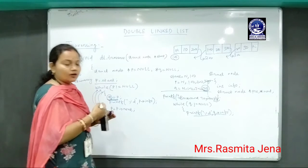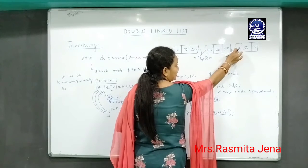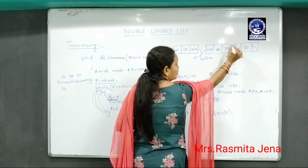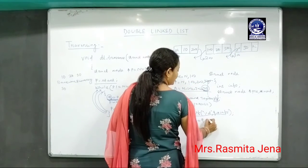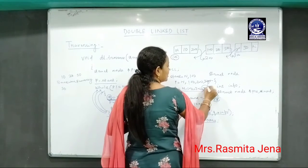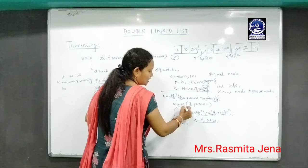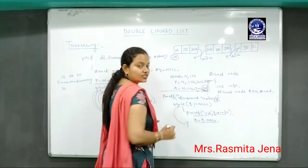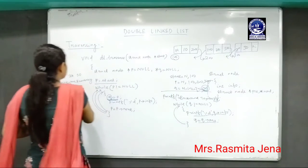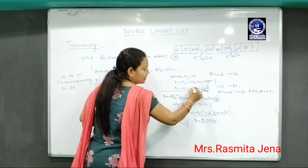Then I will move backward. I write q equals q->pre. Since the pre-part of node 300 contains 200, q becomes 200. Checking the condition: 200 not equal to null is true, so I display the info part of 200, which is 20. Then I write q equals q->pre, so q becomes 100. Checking: 100 not equal to null is true, so I display the info part of 100, which is 10.